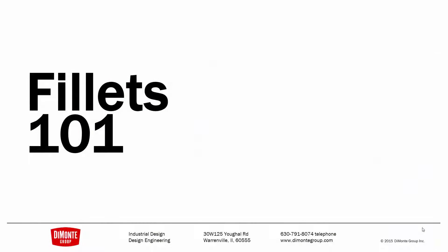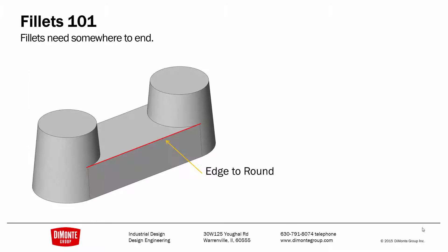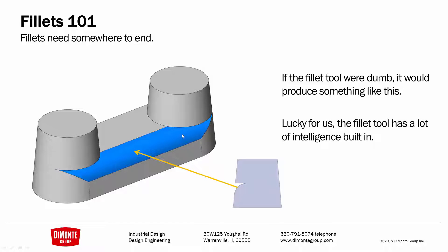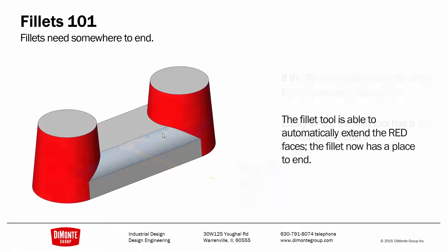I'd like to start with a little bit of theory to understand how the fillet tool works in the background. So if I go to add a fillet to this edge here in red, and the fillet tool was dumb, it might give me a result like this in blue, where the fillets actually undercut these two conical shapes. However, lucky for us, the fillet tool has some intelligence built in.